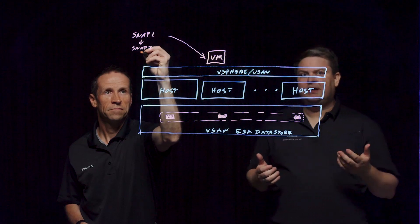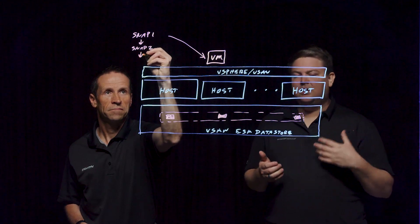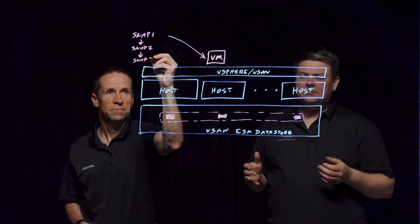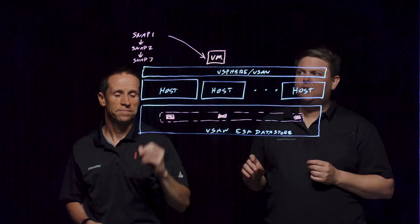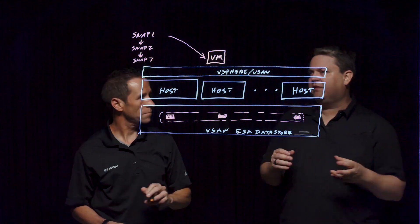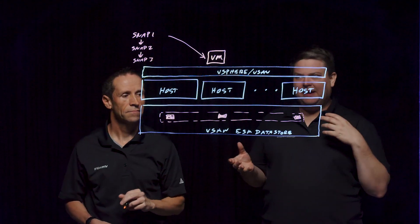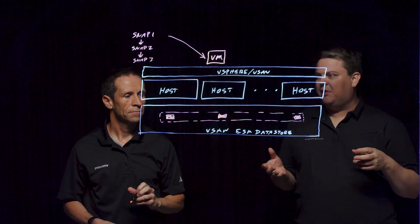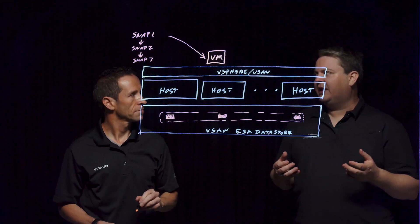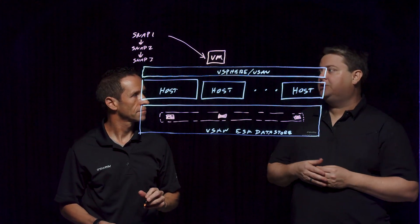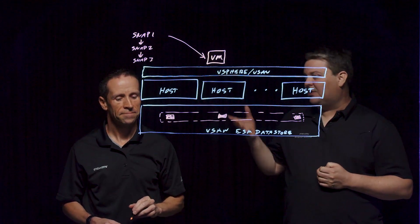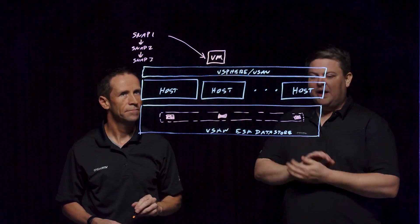If you read the KBs, they'd often tell you: don't keep snapshots around for more than a day or two. If you needed a high-performance snapshot as part of some type of copy data management workflow and you were wanting low stun times, often people would look at offloading to array snapshots and using things like SRA with SRM for that.